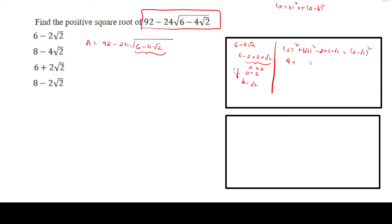2 squared is 4, root 2 whole square is 2, minus 2 times 2 times root 2 is nothing but 4 root 2, which equals 2 minus root 2 whole square. So 6 minus 4 root 2 is nothing but 2 minus root 2 whole square. In the place of 6 minus 4 root 2, we can write 2 minus root 2 whole square.